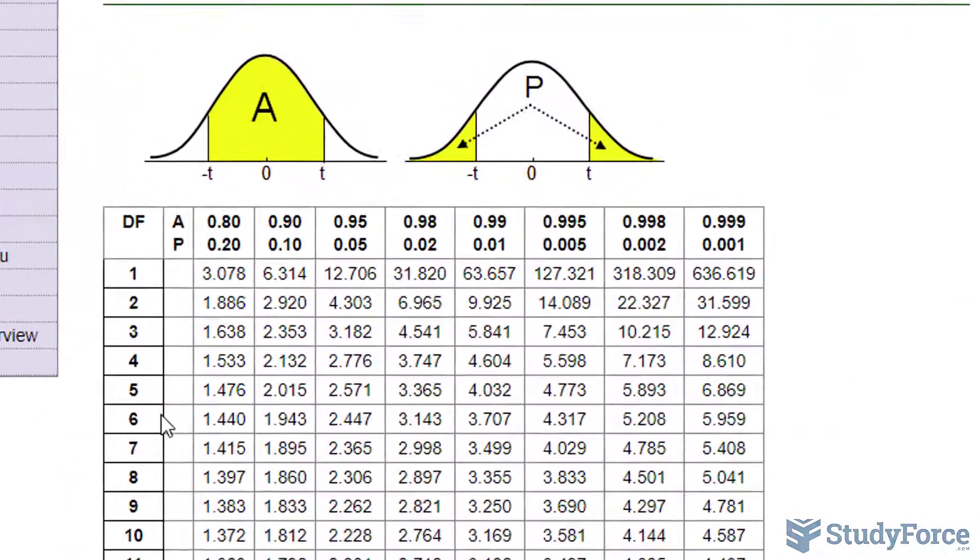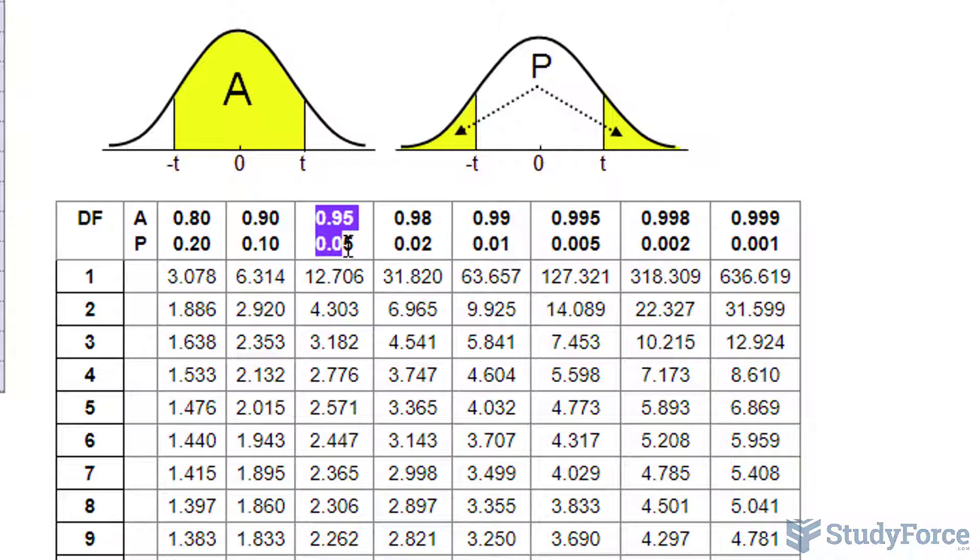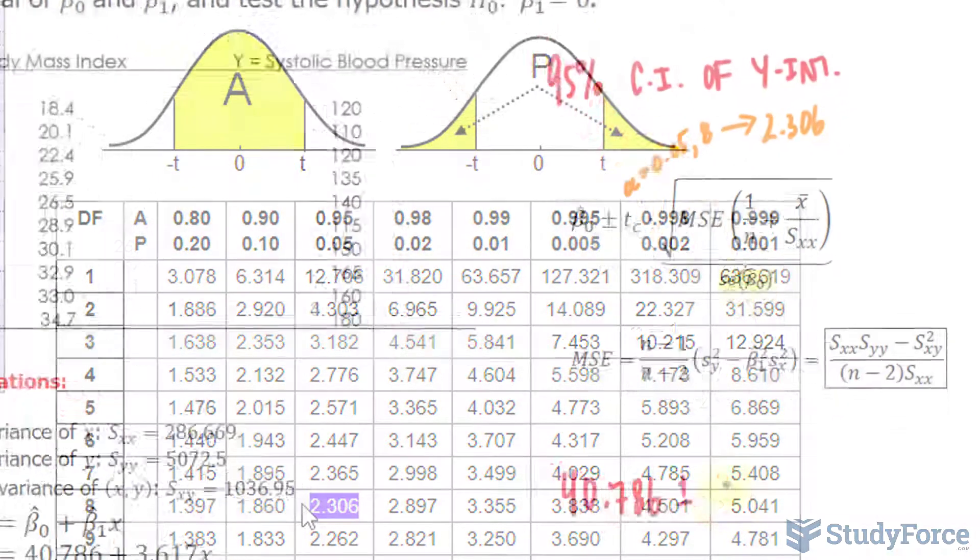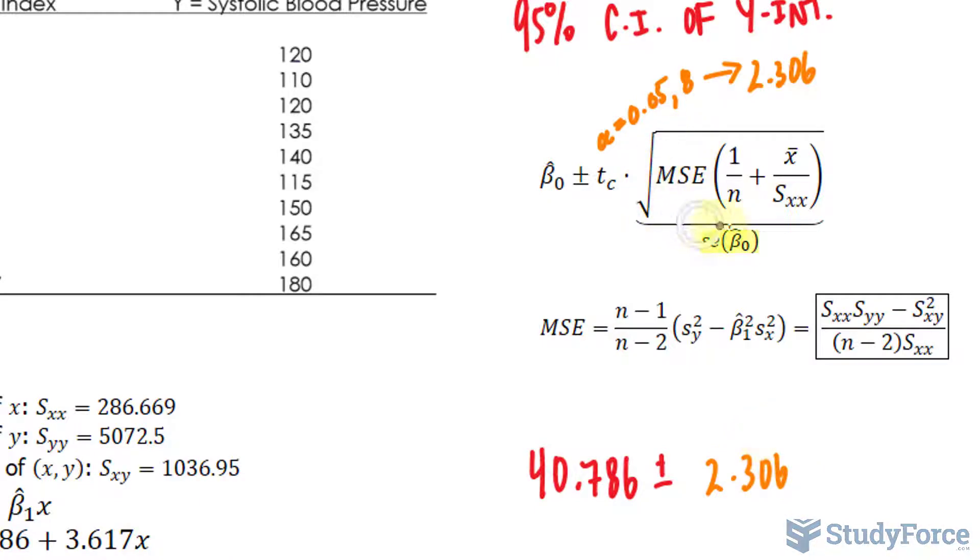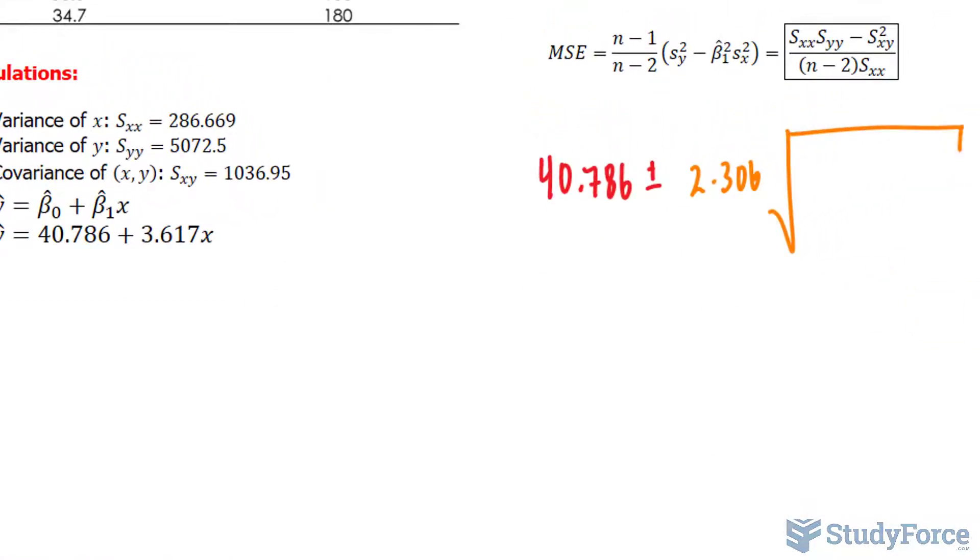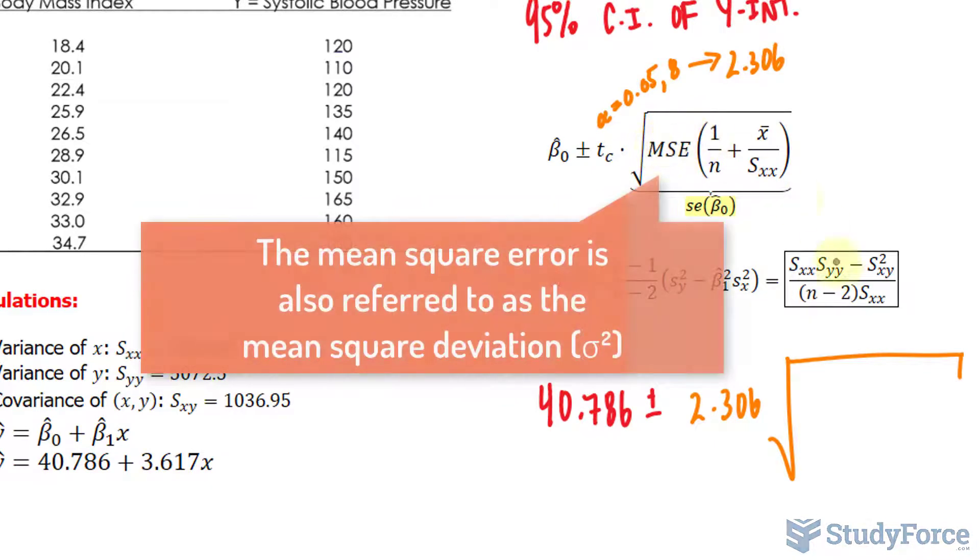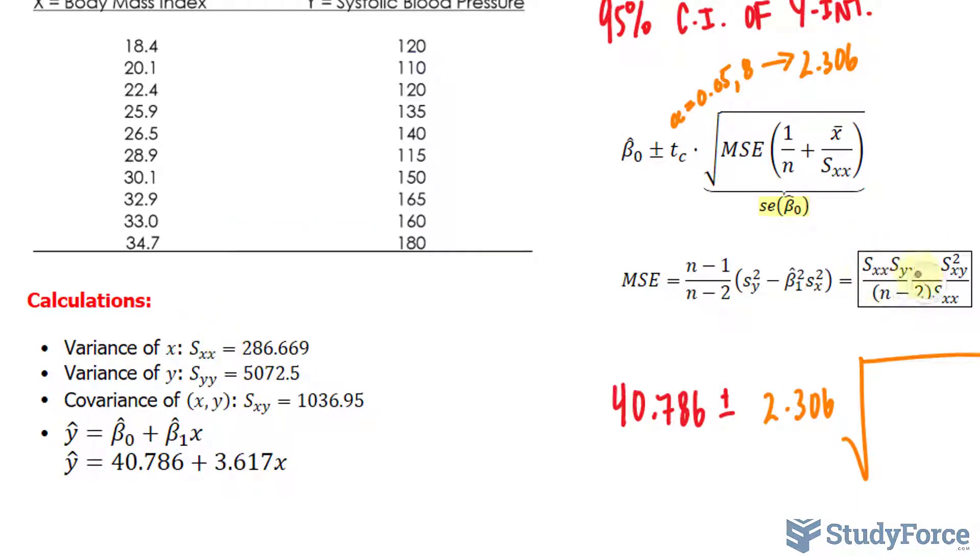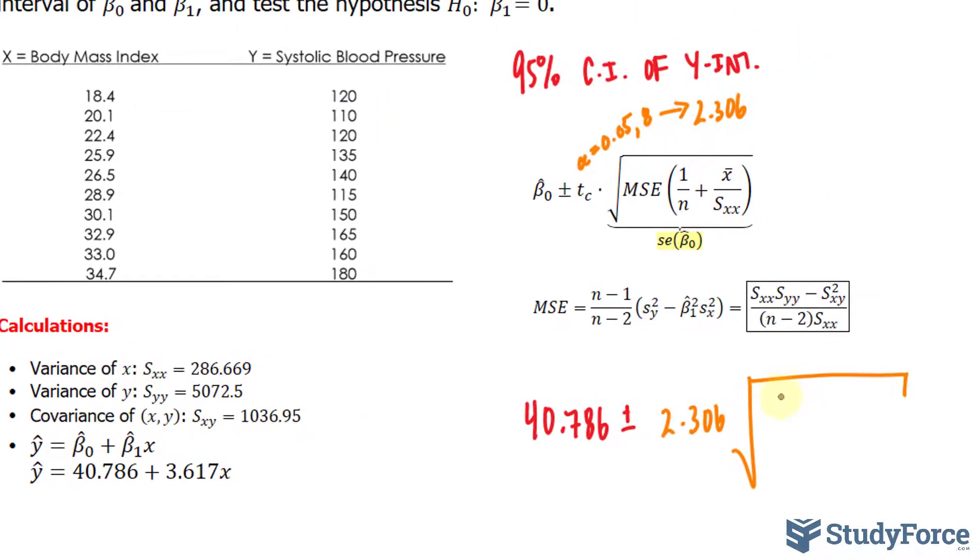Finding this value in a table should give you 2.306. So we'll write down plus minus 2.306 multiplied to this part which is your standard error of the y-intercept. So the square root of the mean square error and the formula for that is shown right here. All of the values that you need for this formula to work are written here. If you calculate it correctly and put it into your calculator, you should end up with 165.2006.